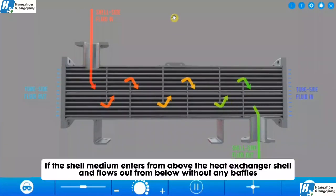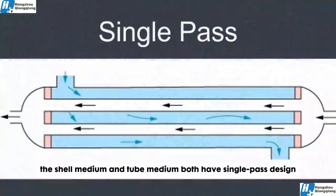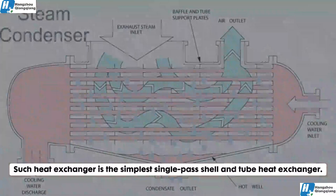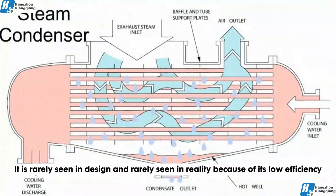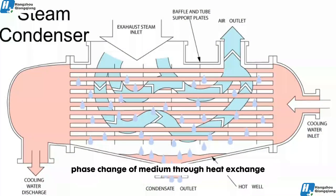If the shell medium enters from above the heat exchanger shell and flows out from below without any baffles, the shell medium and tube medium both have a single-pass design. Such a heat exchanger is the simplest single-pass shell and tube heat exchanger. It is rarely seen in design and rarely seen in reality because of its low efficiency. It is usually used when steam needs to be condensed into water or when you want to achieve phase change of a medium through heat exchange.